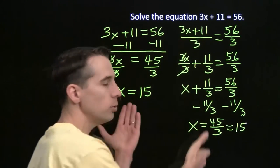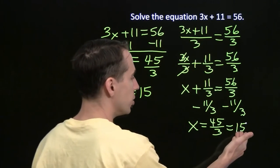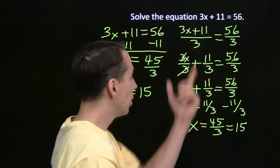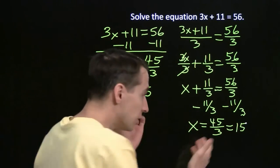Now we did the same problem in two different ways and got the same answer both times. So we're pretty sure we're right. But we can go ahead and check this. We stick the 15 back up in here for x. 3 times 15 is 45 plus 11. That's 56. So the answer is correct.